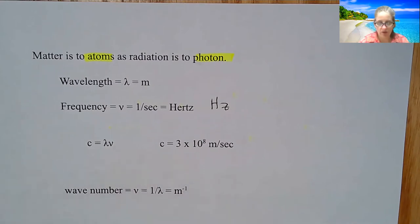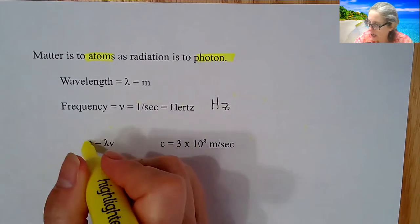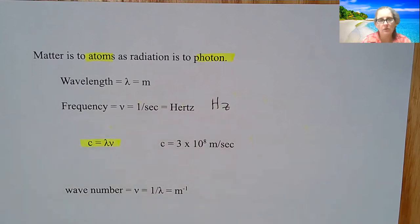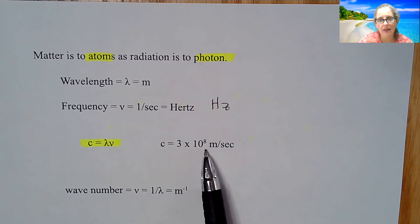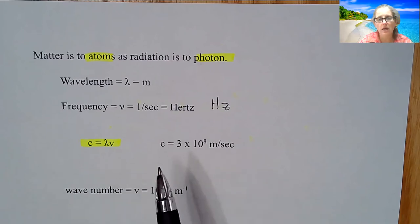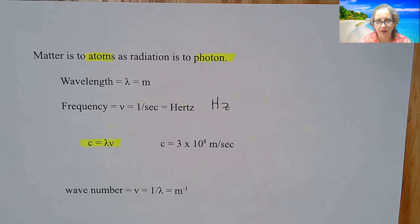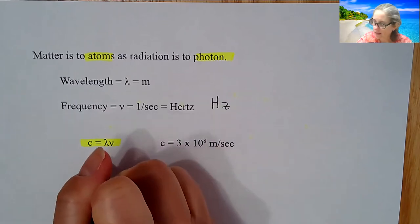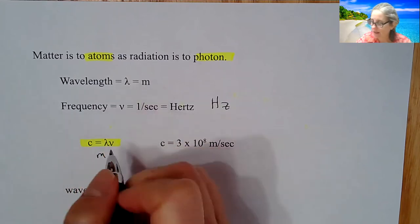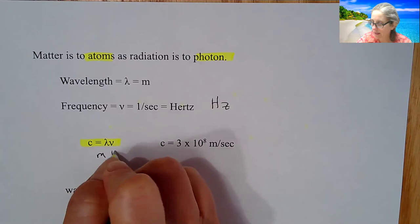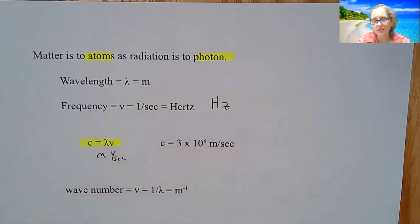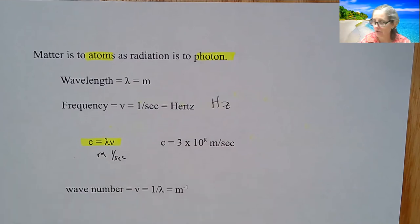We have a very important equation which is the speed of light equals lambda times nu. The speed of light is three times 10 to the eighth meters per second. The number is actually 2.99 something, but this will be fine for what we have to deal with. Since the wavelength is in meters and I'm multiplying it by one over seconds, that is how you get meters over seconds for the speed of light.